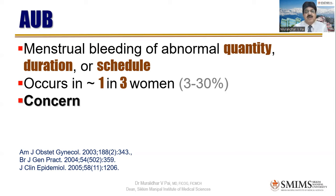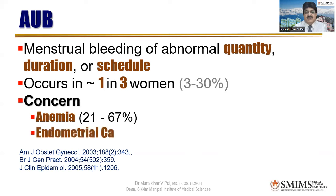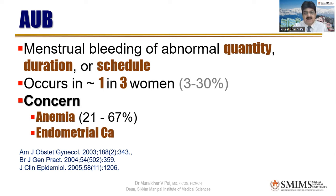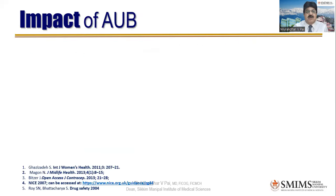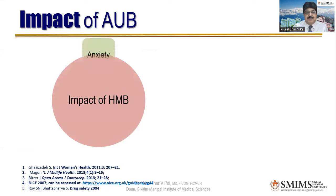We are mainly worried that if these patients are not recognized and treated, they will develop anemia. But more importantly, we should not miss endometrial carcinoma. Especially in an elderly patient, AUB should not be brushed aside as something common during menopause. Many women and many doctors do not know it could be very serious. AUB in an elderly patient, especially near menopause — what we call menopausal transition — should be investigated properly and thoroughly, otherwise endometrial carcinoma may be missed.